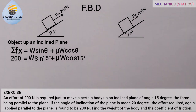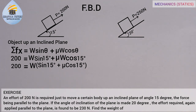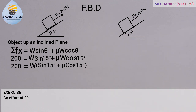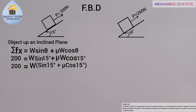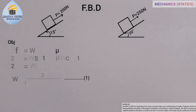Moving forward, 200 equals W sine 15 plus mu W cos 15. Since W is common to both terms, we factor it out: 200 equals W times (sine 15 + mu cos 15). Making W the subject of the formula gives us W equals 200 divided by (sine 15 + mu cos 15). We'll call this equation one.